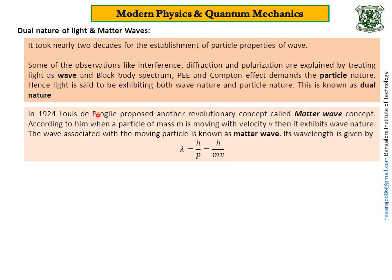In 1924, Louis de Broglie proposed another revolutionary concept called matter wave concept. According to him, when a particle of mass M is moving with velocity V, then it exhibits wave nature. The wave associated with the moving particle is known as matter wave. And its wavelength is given by lambda equals h divided by p. That is h divided by mV. So, according to de Broglie, whenever a particle is moving with certain velocity, it must exhibit wave nature. Irrespective of its mass, charge, spin, particle must exhibit wave nature.